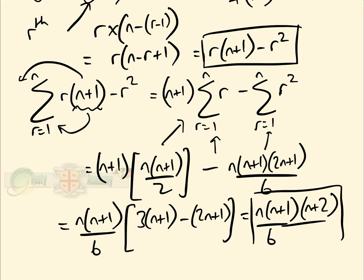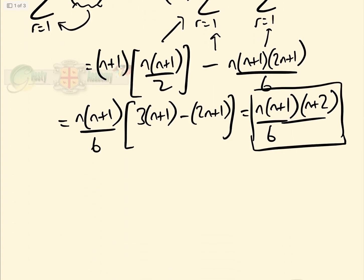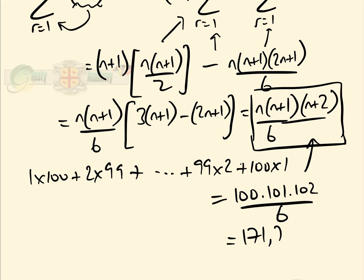To answer the original question we just put n=100. So 1×100 + 2×99 + ... + 99×2 + 100×1 equals 100×101×102/6, which equals 171,700.